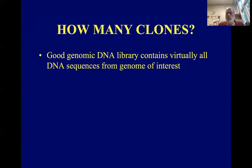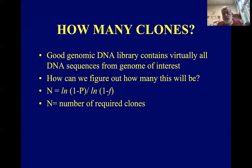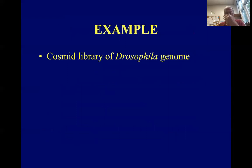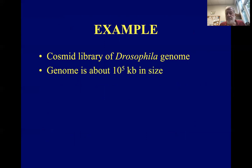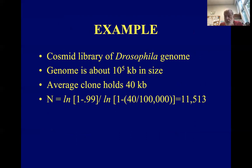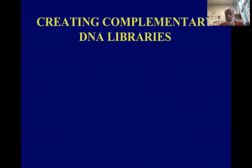How many clones will we need? We can use the formula: n = ln(1 − p) / ln(1 − f), where n is the number of clones, f is the fraction of the genome represented by the average clone size, and p is the probability of a clone containing a certain DNA sequence. For example, for a cosmid library of the entire fruit fly genome — about 10^5 kilobases — with an average clone holding about 40,000 base pairs, we'd need 11,513 clones. That's probably six months of full-time work. Because so much of eukaryotic genome doesn't code for anything, people rely more on cDNA libraries.